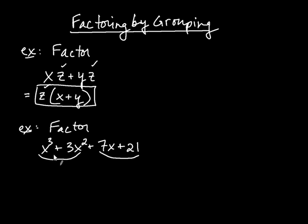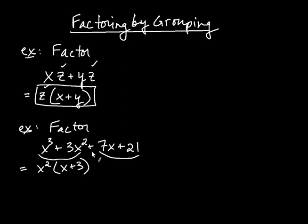What do these first two terms have in common? That would be x squared. So let's factor that x squared out of those two terms: x squared multiplied by x plus 3. Don't forget this addition sign is still here — it's still a plus. And then what do the last two terms have in common? That would be a 7, so it's going to be 7 times x plus 3.